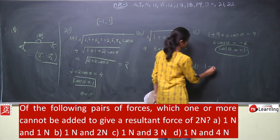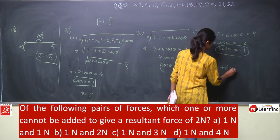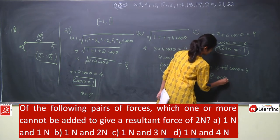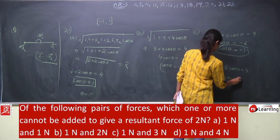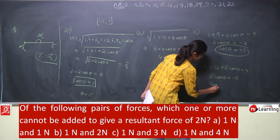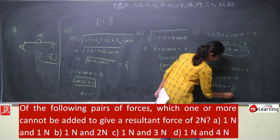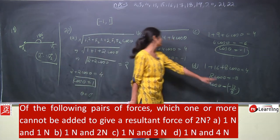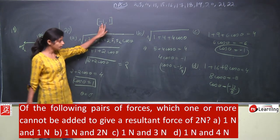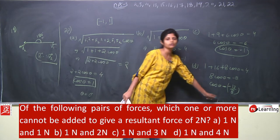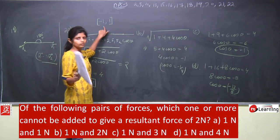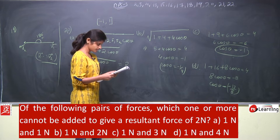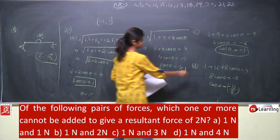Case D: 1 newton and 4 newton. The expression gives 1 + 16 + 8·cos θ = 4, so 8·cos θ = 4 − 17 = −13, giving cos θ = −13/8. Since −13/8 is less than −1, it falls outside the valid range of cos θ. This value is not acceptable, so the answer is option D — these forces cannot give a resultant of 2 newtons.